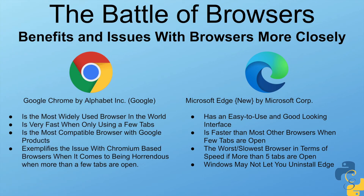Let's talk about the benefits and issues with the browsers in particular. Beginning with Google Chrome: it is the most widely used browser in the world, it is very fast when using only a few tabs, and it is the most compatible browser with Google products. However, it does exemplify the issue with Chromium-based browsers, becoming very slow when more than a few tabs are open.